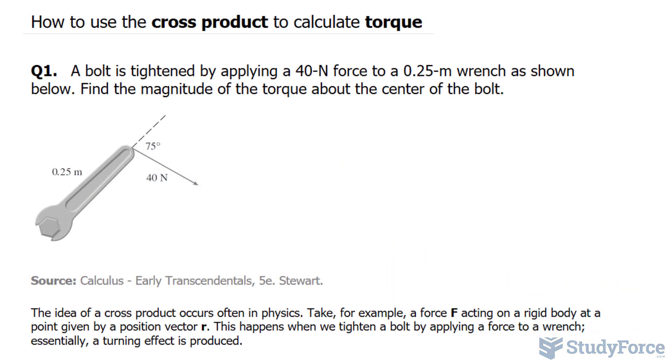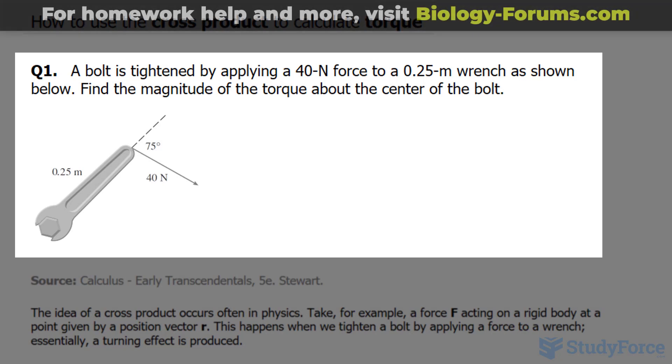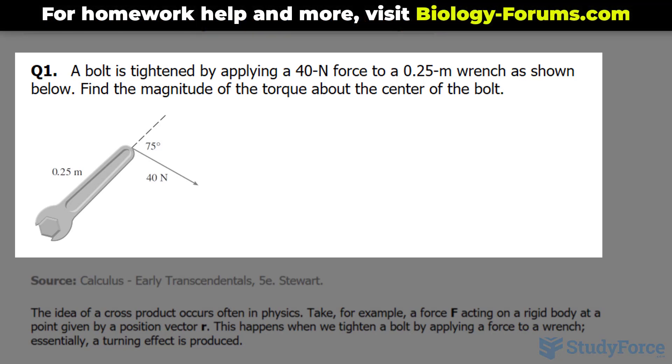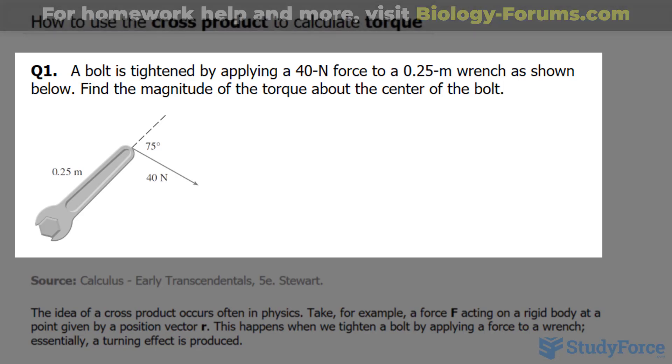In this tutorial, I'll show you two examples on how you can use the cross product to calculate torque. Question one reads: a bolt is tightened by applying 40 newtons force to a 0.25 meter wrench as shown in the figure. Find the magnitude of the torque about the center of the bolt.